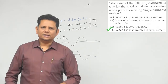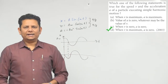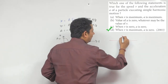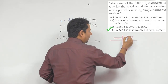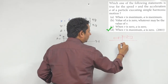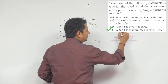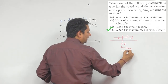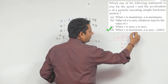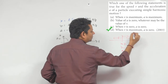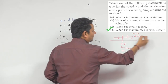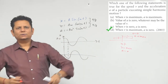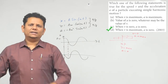Based on all this, हम कह सकते हैं कि option number D would be the right answer. इसको physically देखें: जब particle mean position पर होता है, तो V की value maximum है और acceleration 0 है. और extreme position पर velocity 0 है और acceleration maximum है. इस graph से और physical interpretation से भी, इसका right answer होएगा option number D — when V is maximum, A is 0.